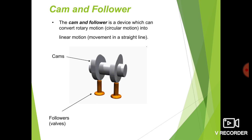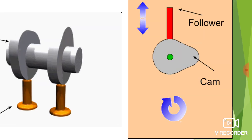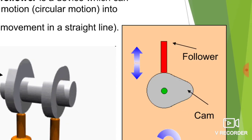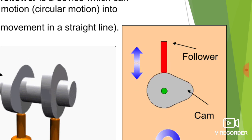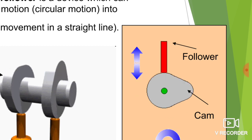As the cam rotates, it has a rotary motion and will rotate with uniform velocity. As the follower is in contact with the cam, it will reciprocate inside the guide. Here in this diagram you can see the cam has a rotary motion, mounted over the shaft, and the follower — shown in red color — is in contact with the cam. As the cam rotates with uniform velocity, the follower will move up and down. The motion of the follower depends on the profile of the cam.